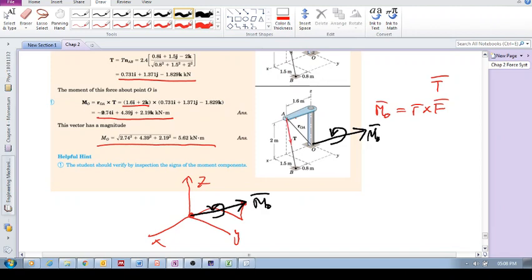Kilonewton meter, but there's a minus there, which means you point your thumb in the negative x direction. If that's the positive x-axis, you point your thumb in the negative x direction, and that's that component there: 2.74 kilonewton meter. Point your thumb and we basically have that kind of rotation about the x-axis.